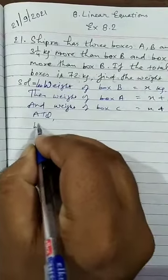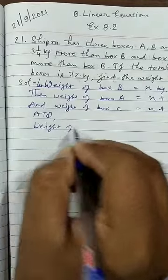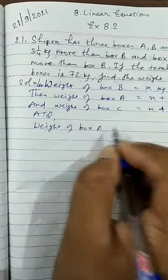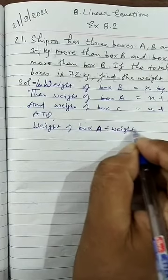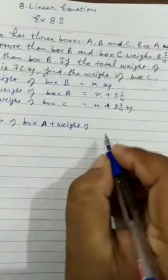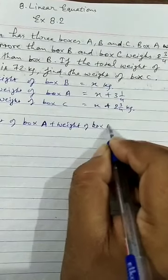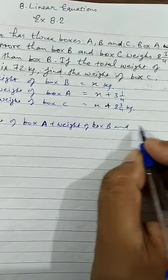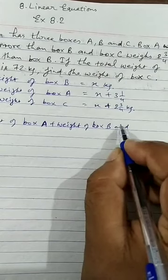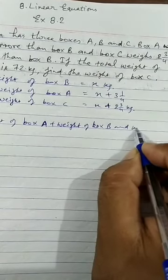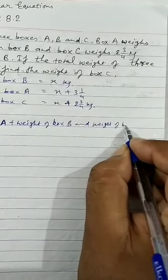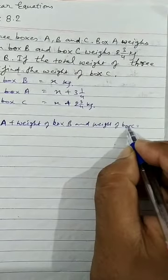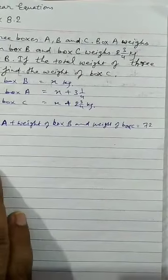it means that weight of box A plus weight of box B plus weight of box C equals to 72 kg.